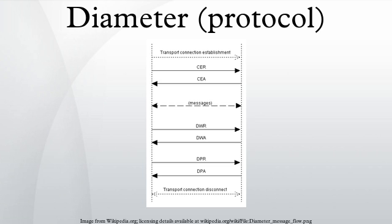Message Flows: The communication between two Diameter peers starts with the establishment of a transport connection. The initiator then sends a capabilities exchange request to the other peer, which responds with a capabilities exchange answer.